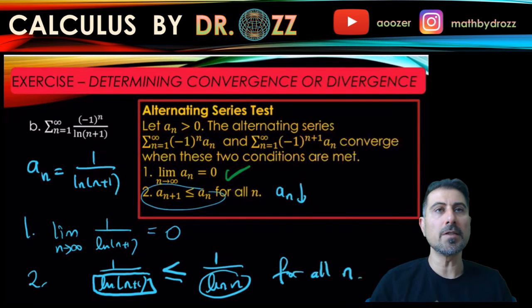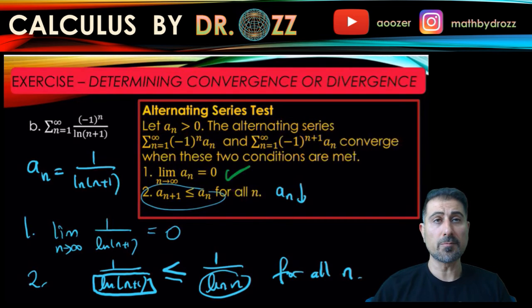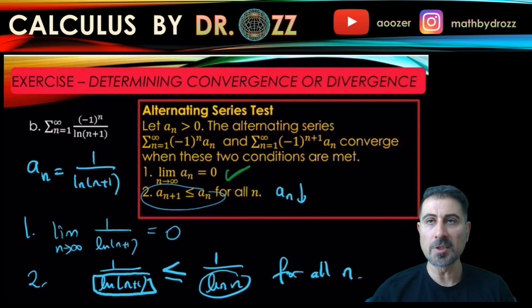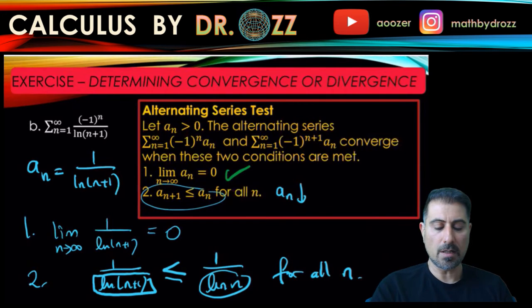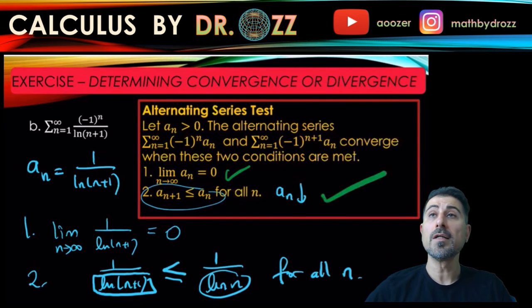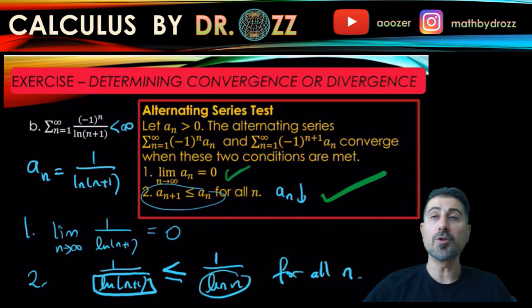See, I didn't need to define a function and I didn't need to take the derivative of that. Even if you do it, you will get the same result anyway. But this is sort of a shortcut by just observation that you can prove this inequality, which means a_n is decreasing. So all two conditions are met. So I can go ahead and conclude that this is a convergent series.